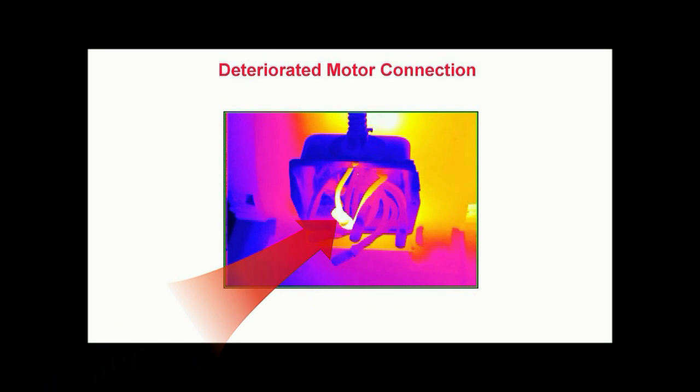Here we see a thermal pattern caused by a loose or deteriorated electrical connection within the junction box of a motor. Since thermal imagers cannot see through solid materials, the junction box cover has been removed to provide a clear line of sight to the connections.